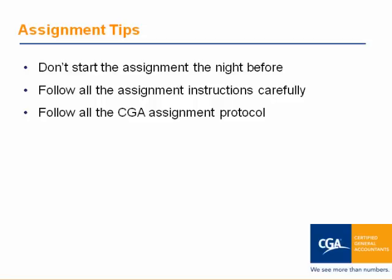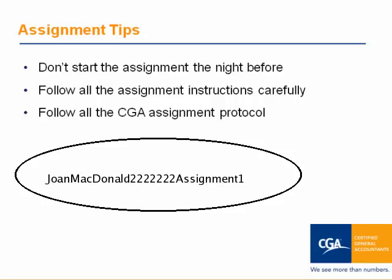This is a big one: saving your file. When you save your assignment for submission, you have to do it in the CGA assignment protocol, which is your first name, your last name, your student ID number, and then your assignment number. For example, if your name was Joan MacDonald, you would do it as Joan MacDonald, student ID 2222222, assignment 1. So: your first name, your last name, your ID number, your assignment number — that is how you should be saving your assignment.